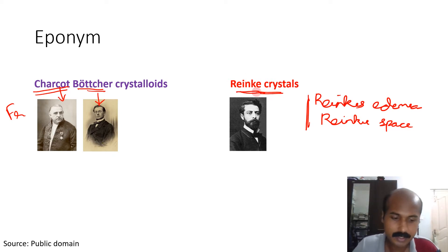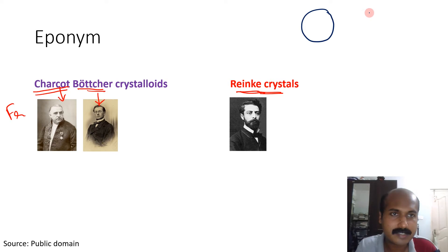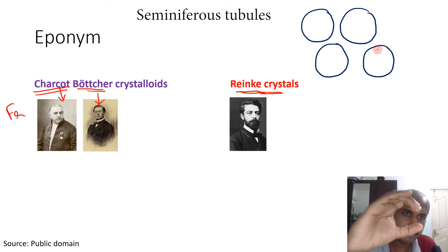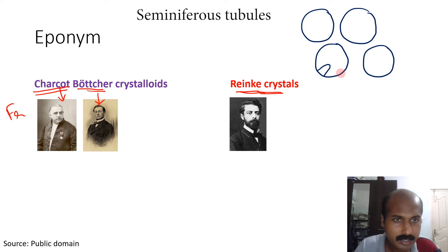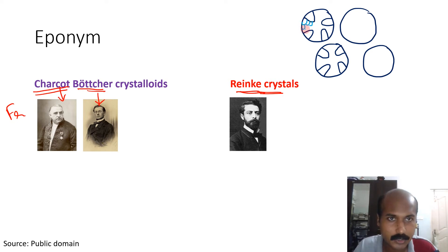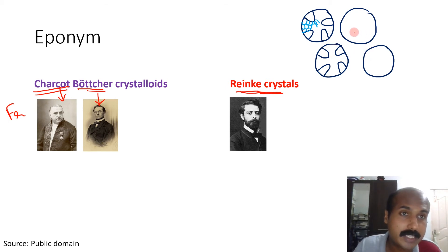Reinke crystals are related to the testis. In the testis you have seminiferous tubules — these cut sections show cells lining from the base to the lumen called Sertoli cells. Embedded within the Sertoli cells are the spermatogenic cell lines: spermatogonia, primary and secondary spermatocytes, spermatids, and finally spermatozoa.